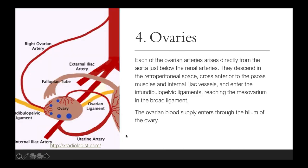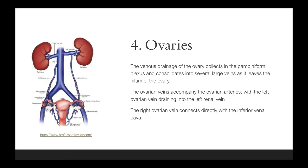Each of the ovarian arteries arises directly from the aorta. The right ovarian artery arises just below the renal arteries. They descend in the retroperitoneal space, cross anteriorly to the psoas muscles and the internal iliac vessels, and enter into the infundibulopelvic ligaments, reaching the mesovarium in the broad ligament. The ovarian blood supply enters through the hilum of the ovary. The venous drainage collects in a pampiniform plexus, with the left ovarian vein draining into the left renal vein, whereas the right ovarian vein drains directly into the inferior vena cava.